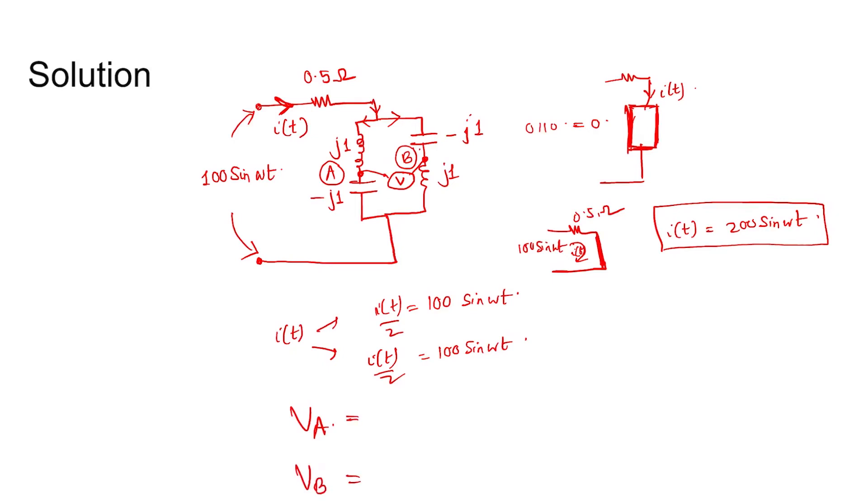The potential of A, if this is ground, is given by the voltage drop across this. G minus j1, so just multiply the current 100 sin(ωt) into minus j1, this much volts. And similarly 100 sin(ωt) for B into this one, into this one, j1 volts.